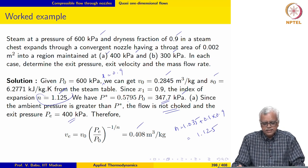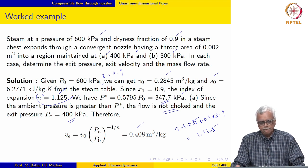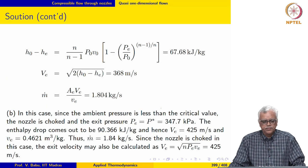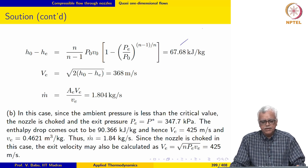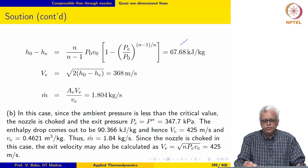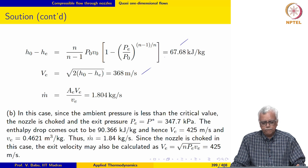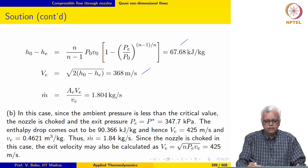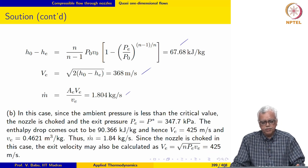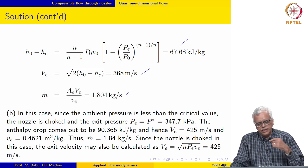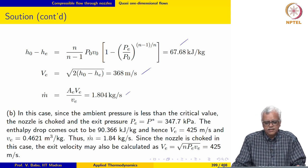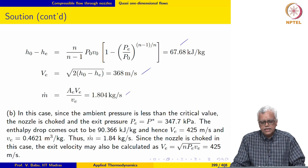Since the nozzle is not choked, the flow at the exit is subsonic, so exit pressure equals ambient pressure. We evaluate the specific volume at exit using the appropriate expression, and the enthalpy drop between the stagnation chamber and the exit gives the exit velocity as 368 m/s. The mass flow rate is evaluated as ṁ = Aₑ × Vₑ / vₑ = 1.804 kg/s.